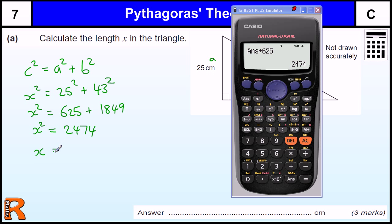So to find X, we need to do the square root of 2474. So press the square root and the answer. That gives us 49.73932046.